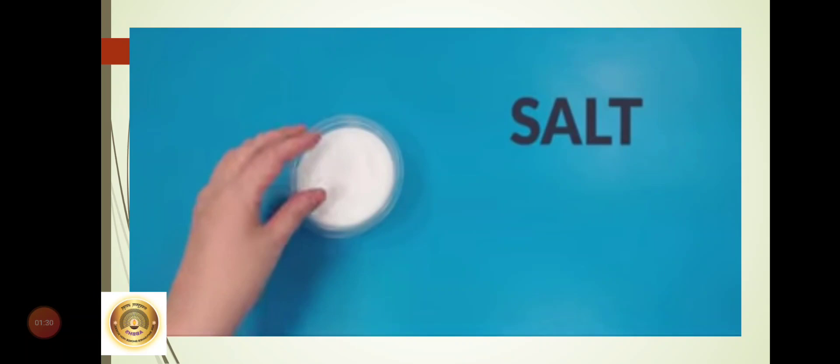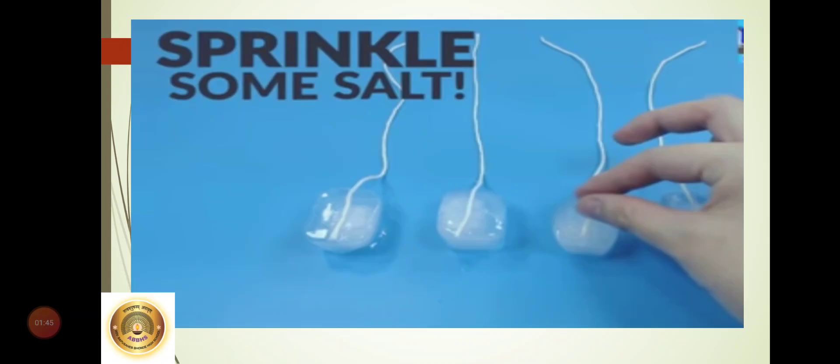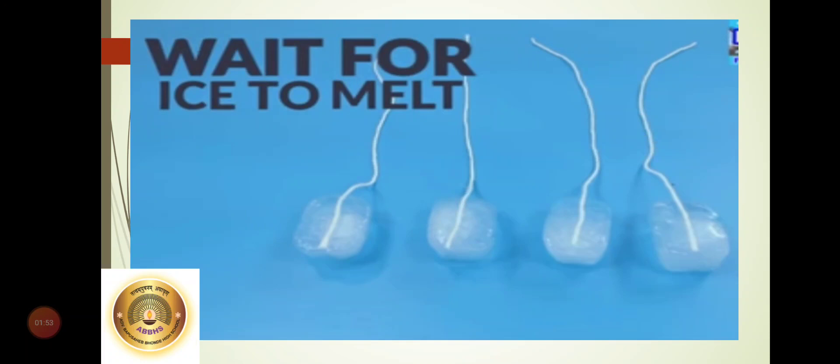Now what do you need to do? You will need to place the string on the ice cubes in the way it is mentioned in the image. Now you need to sprinkle some salt on the thread where the ice cubes are on.